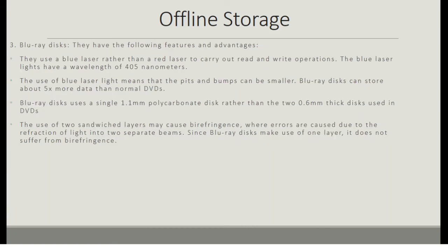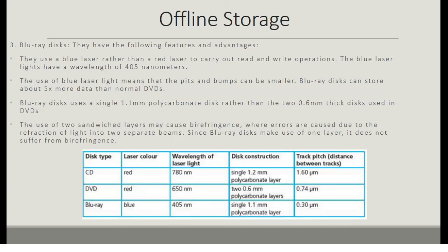Blu-ray discs use a blue laser light rather than red laser to carry out read and write operations. The blue laser has a wavelength of 405 nanometers, meaning the pits and bumps can be smaller, allowing Blu-ray discs to store about five times more data than normal DVDs. Blu-ray discs use a single 1.1 mm polycarbonate disc rather than the two 0.6 mm thick discs used in DVDs, avoiding birefringence — errors caused by refraction of light between two separate beams. A table below shows the comparison of CD, DVD, and Blu-ray discs.